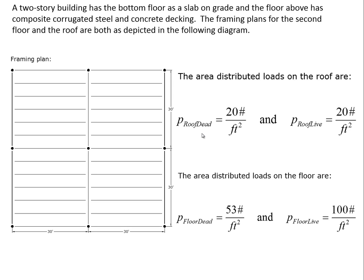For the live load on the roof, snow load in Raleigh, North Carolina would be 15 pounds per square foot, but we have to design for 20 pounds per square foot from workers doing maintenance or upgrades. Those two loads end up being the same quantity in this problem. For the floor, the dead load of the slab and associated items is 53 pounds per square foot, and the prescribed live load on the floor is 100 pounds per square foot.